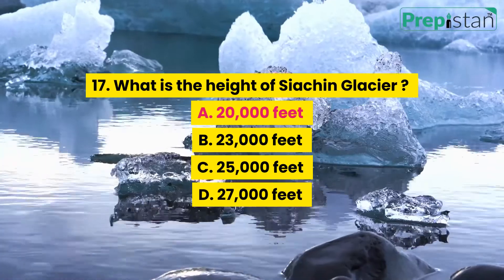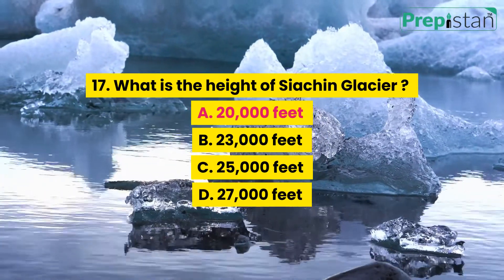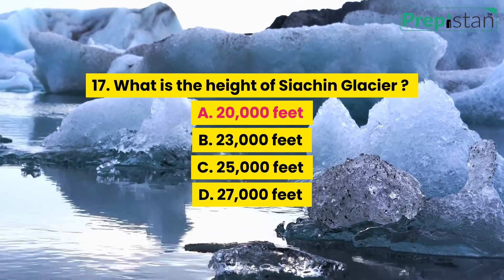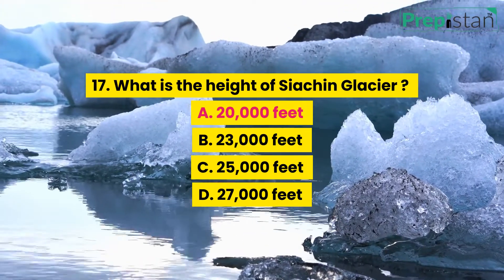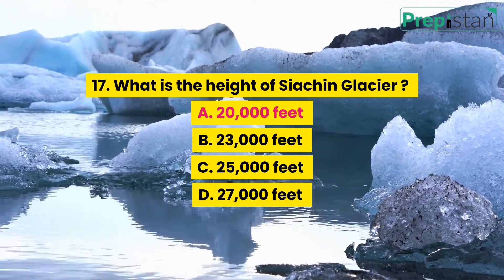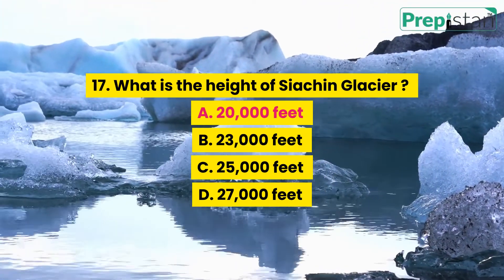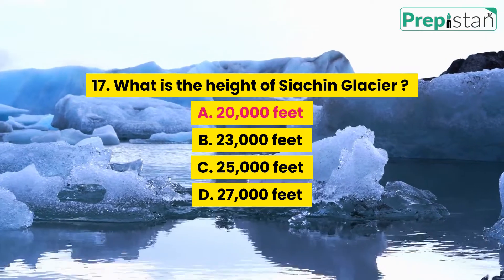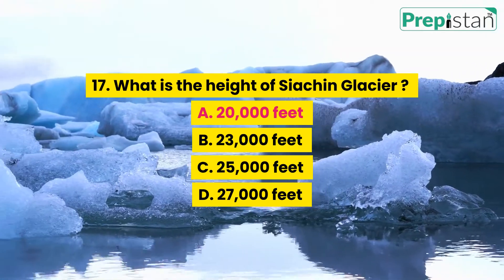Question 17: What is the height of Siachen Glacier? A. 20,000 feet, B. 23,000 feet, C. 25,000 feet, D. 27,000 feet.